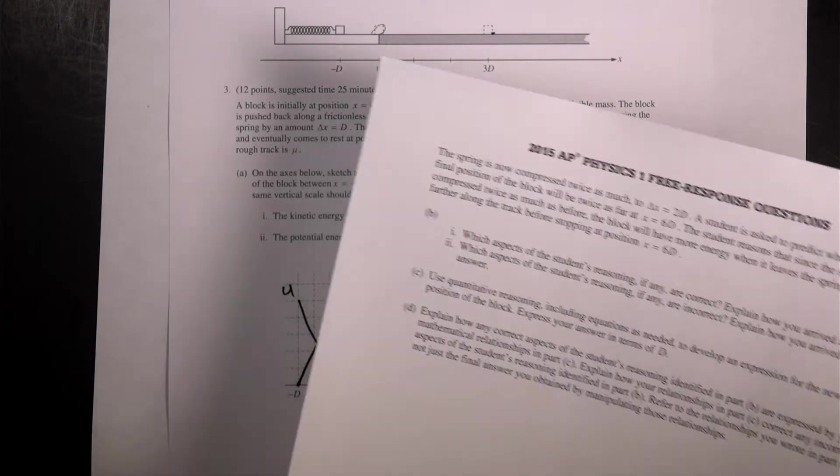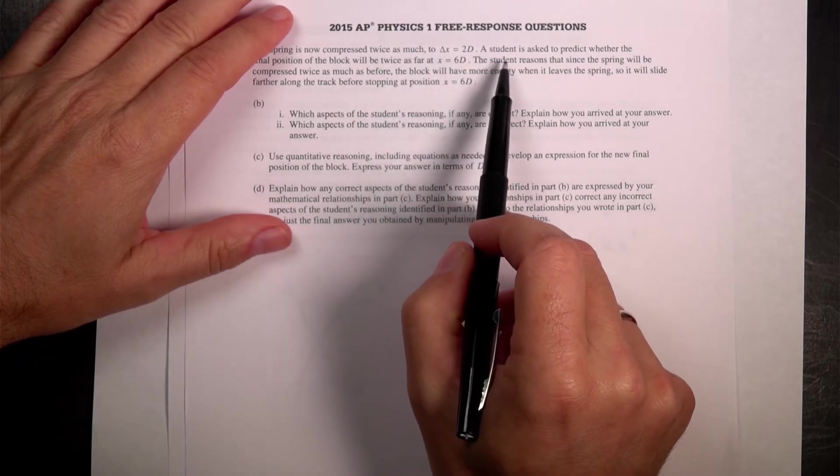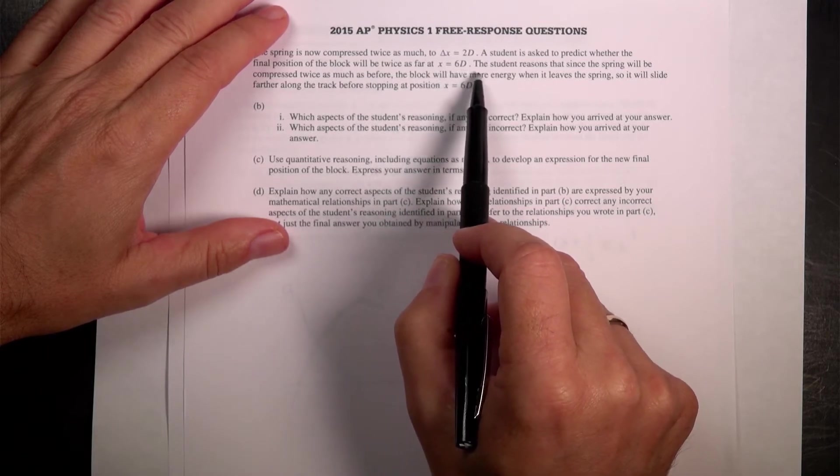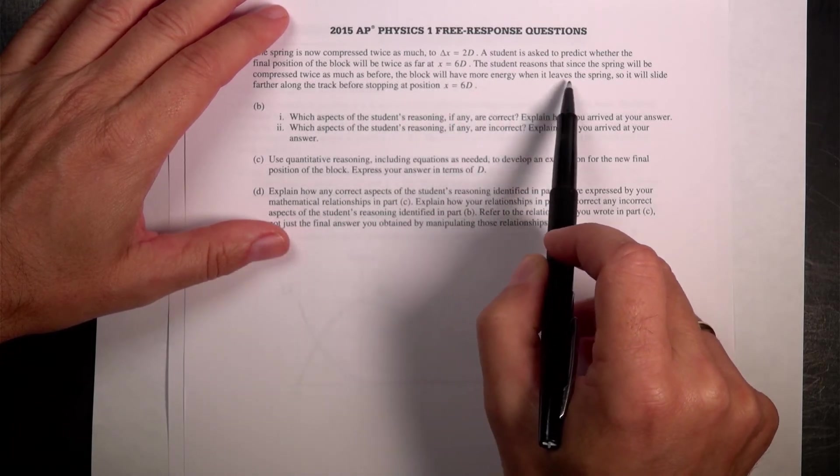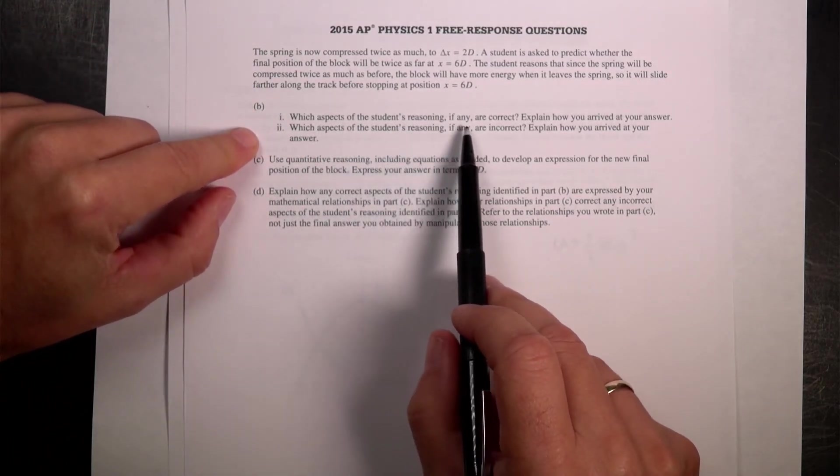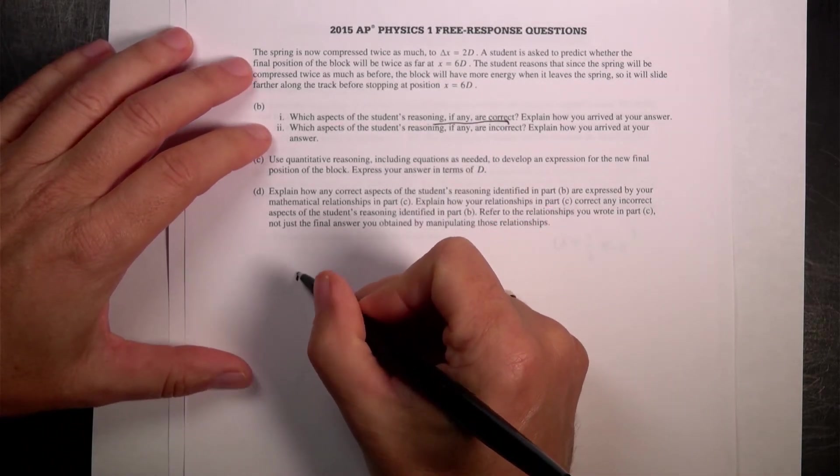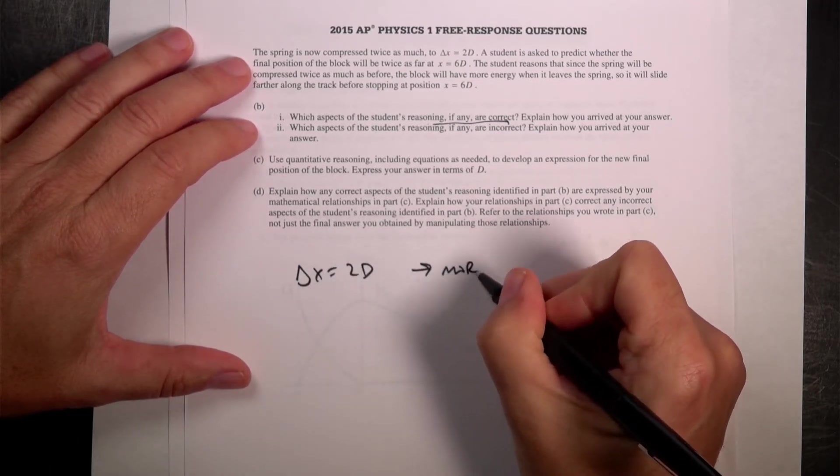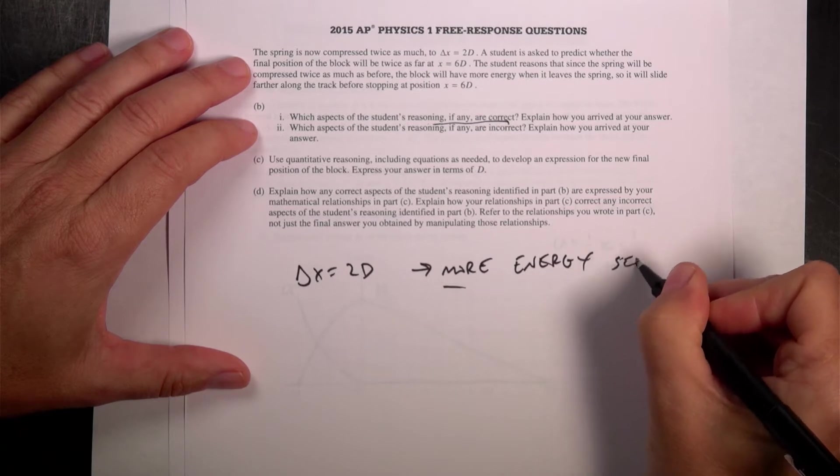Moving on to part b. The spring is now compressed twice as much, so delta x is 2d. A student is asked to predict whether the final position of the block will be twice as far at 6d. The student reasons that since the spring will be compressed twice as much, the block will have more energy when it leaves. Which aspects of the student's reasoning, if any, are correct? Well, the correct part is that if delta x is 2d, then more energy will be stored.